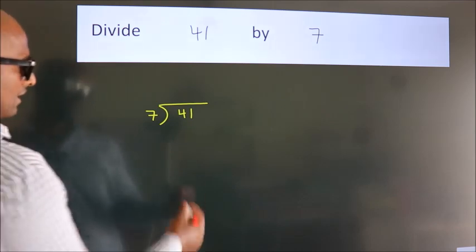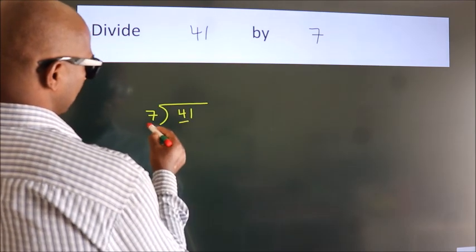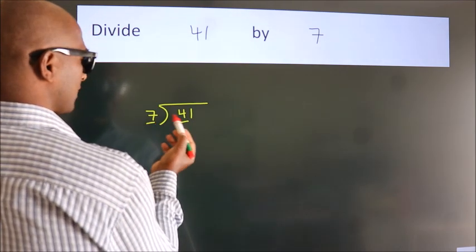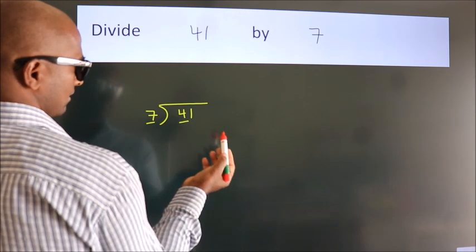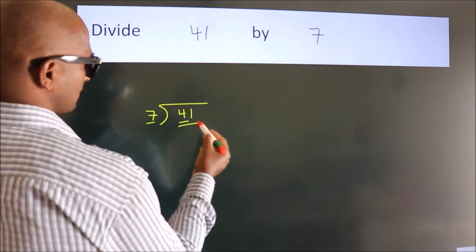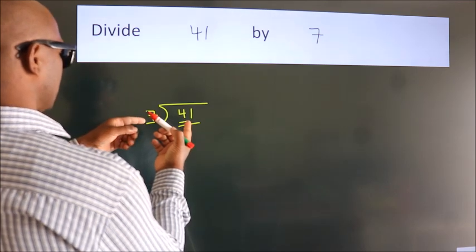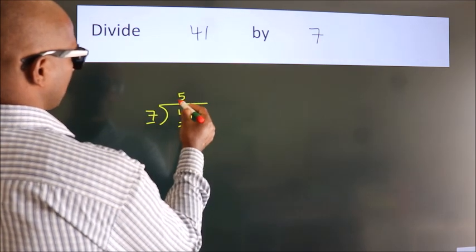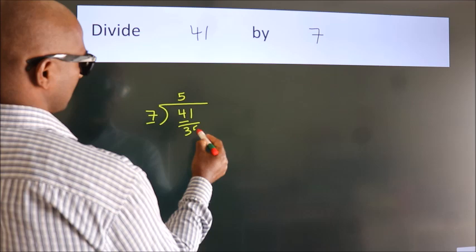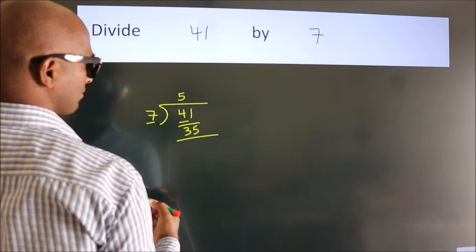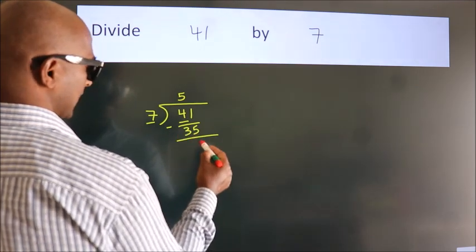Next. Here we have 4, here 7. 4 is smaller than 7, so we should take two numbers, 41. A number close to 41 in the 7 table is 7 fives, 35. Now we should subtract. We get 6.